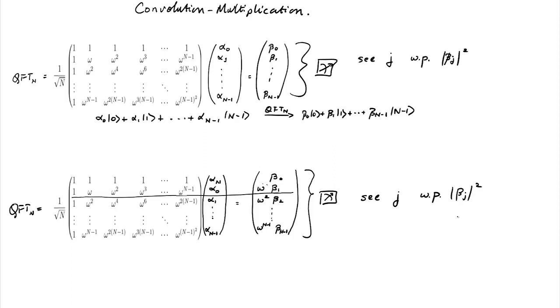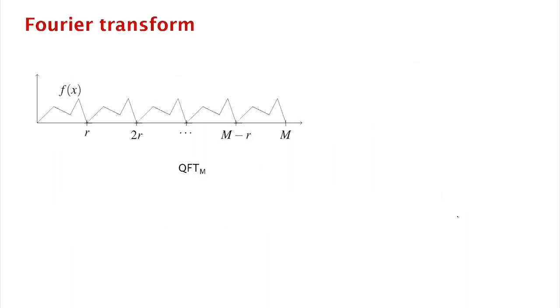The moral is: if what you're planning to do is Fourier sampling, then any cyclic shift of your input superposition makes no difference to the output probability distribution. That's property number one of the quantum Fourier transform.